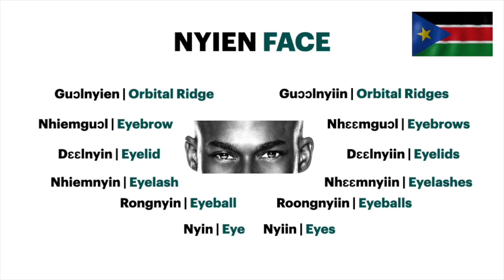We call the occipital ridge gul nyin for one — gul nyin. If there are many, we say gul nyin.